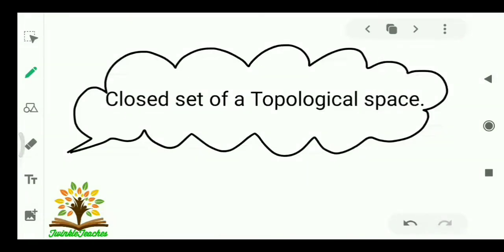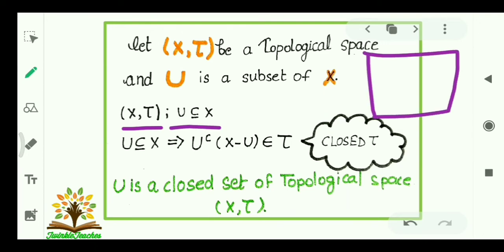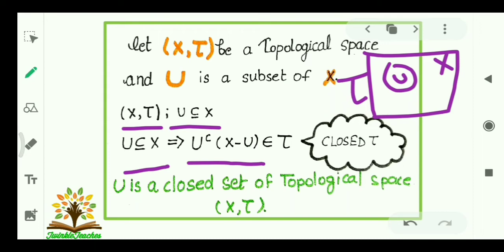Let us come to the closed set of a topological space. Let (X, τ) be a topological space and U be a subset of X. We say that U is a closed set if U is a subset of X and the complement of U belongs to τ. Then U is known as a closed set of topological space (X, τ).